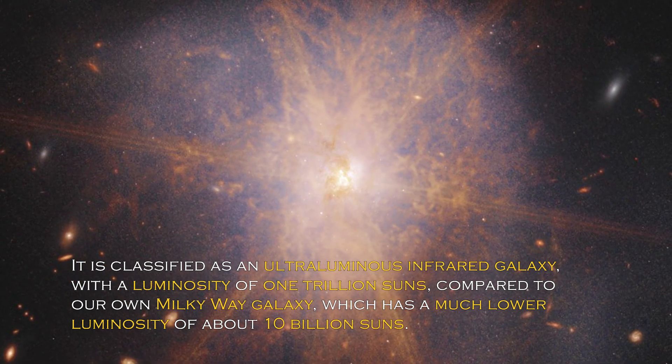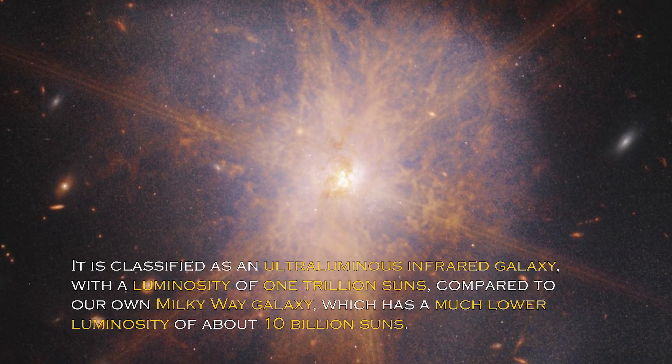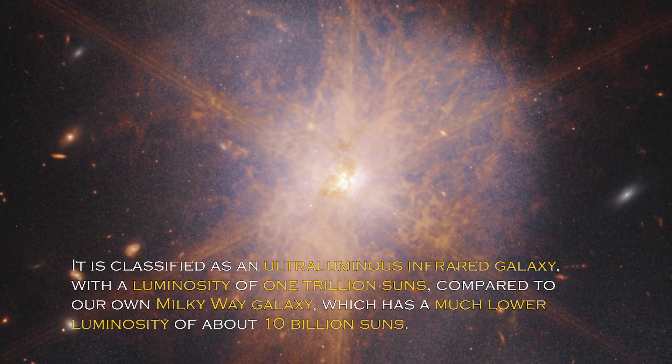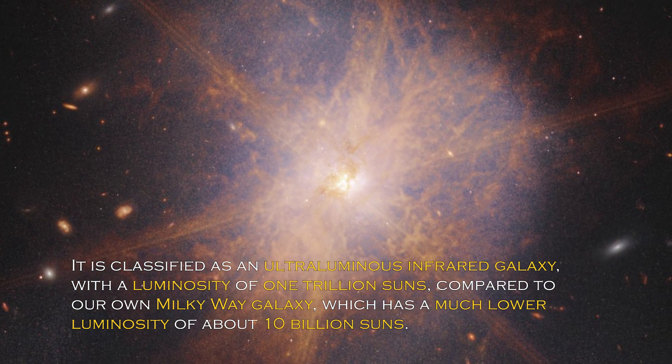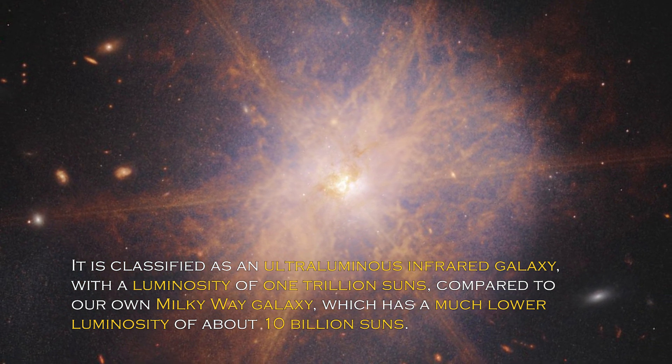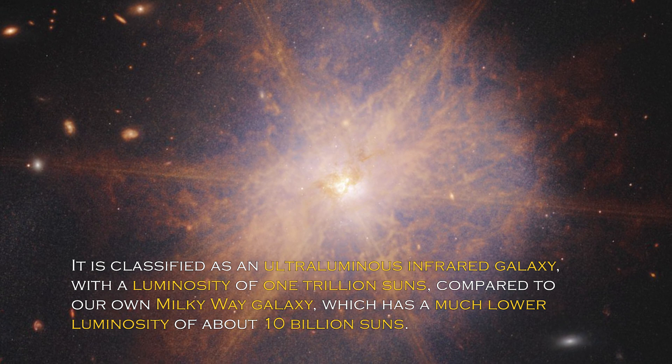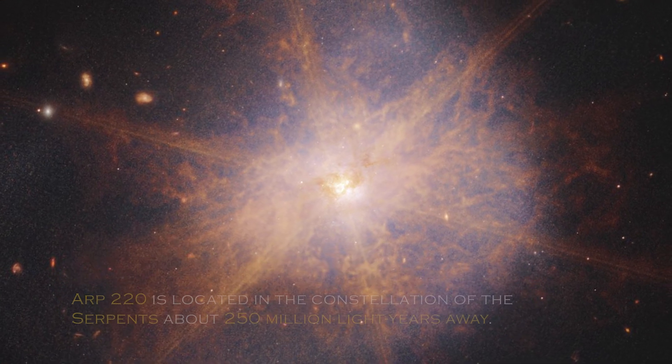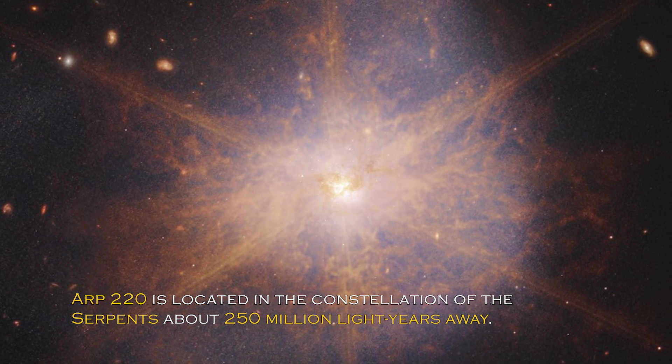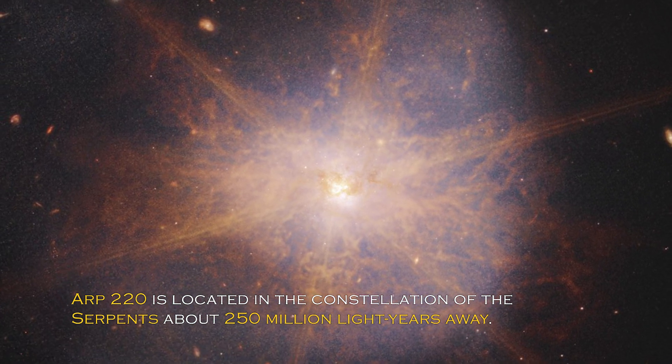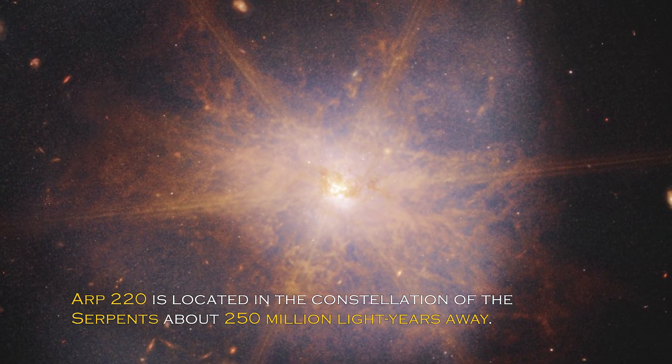It is classified as an ultra-luminous infrared galaxy, with a luminosity of one trillion suns compared to our own galaxy, the Milky Way, which has much lower luminosity of about 10 billion suns. ARP 220 is located in the constellation Serpens, about 250 million light-years away.